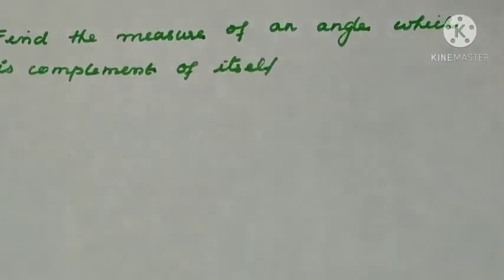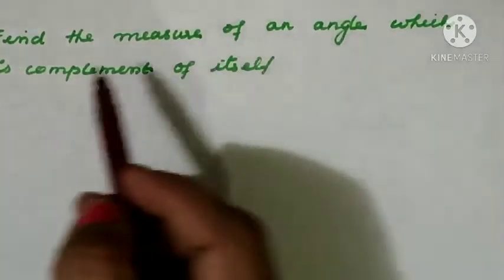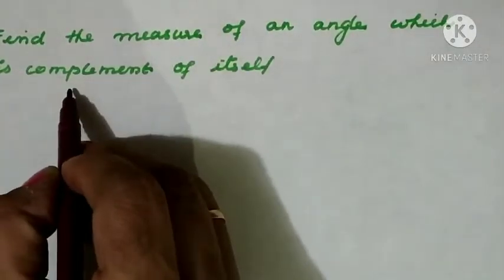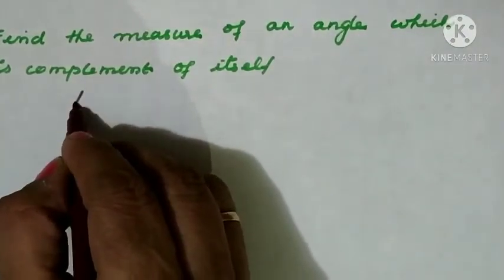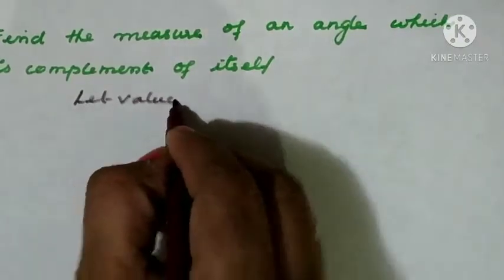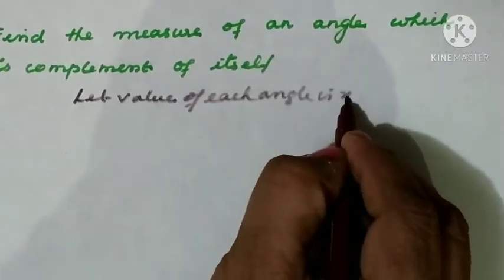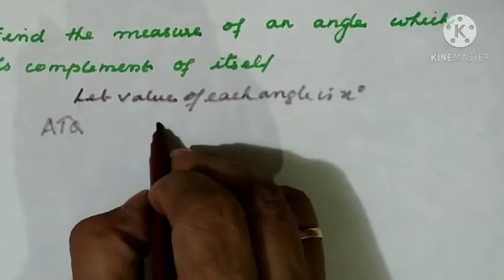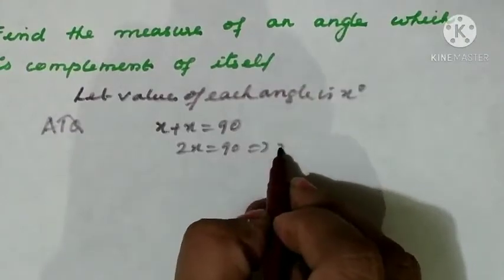Find the measure of an angle which is a complement of itself. Complementary angles sum to 90 degrees, and each is called a complement of the other. Since the angle equals itself, let the value of each angle be x. Then x plus x equals 90 degrees, so 2x equals 90, giving x equals 45 degrees.